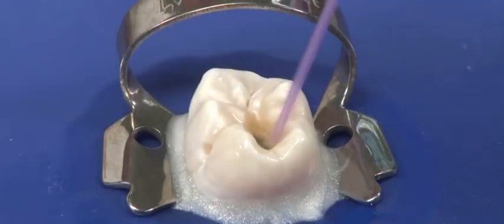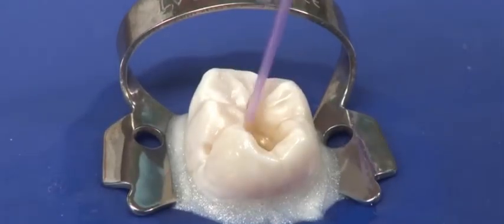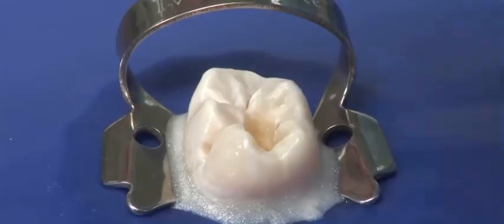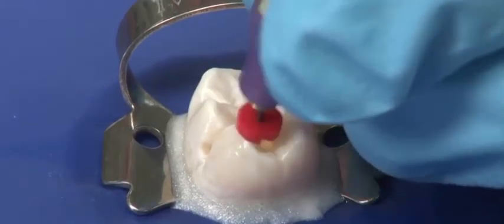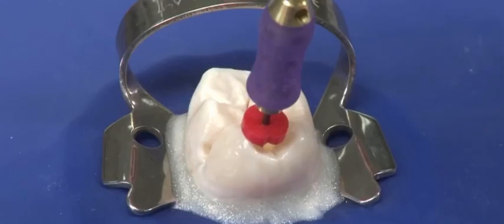Suction the excess solution from the pulp chamber with a capillary tip, leaving only the canal wet. Depending on the size of the canal, insert a number 15 hand K file or another appropriate file into the canal.